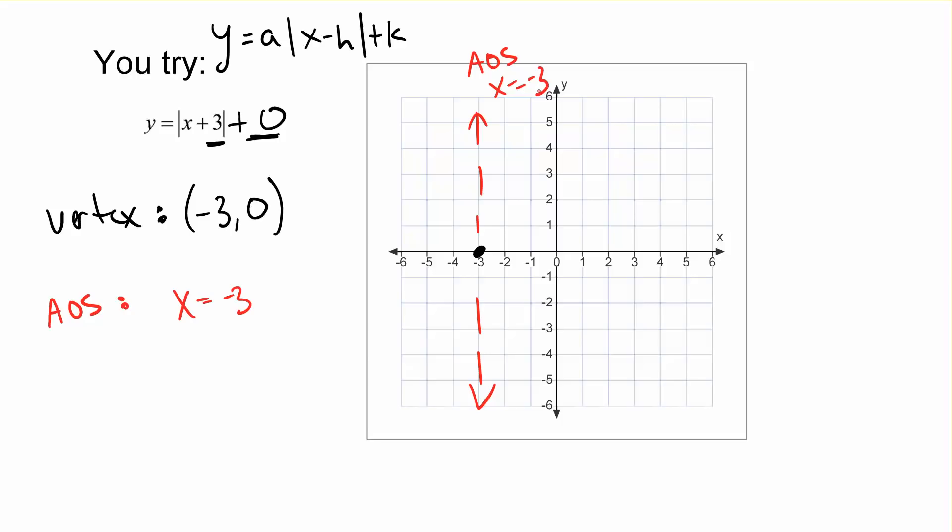We can find our slope, our a value, now that's a is out in front, right? So if there's nothing here, but that's multiplication, so what can we multiply by and not change our equation? We can multiply by 1. So our a value is 1, so that means we're going to be going up 1 over 1. So if we're going up 1 and over 1, we can also go up 1 and over 1 in the other direction. And we've got our line. We can label our vertex as negative 3, 0. All right.